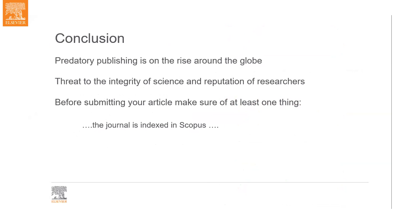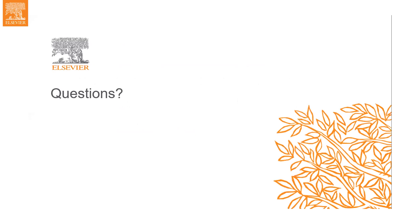In conclusion, our short and simple message is that predatory publishing is a global phenomenon. It is a real threat to the integrity of science and the reputation of researchers. But before submitting your article, make sure of at least one thing: that the journal is indexed in Scopus. With that, we come to the end of our presentation, and we can make a few minutes available for questions.